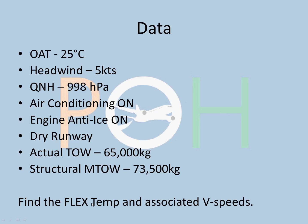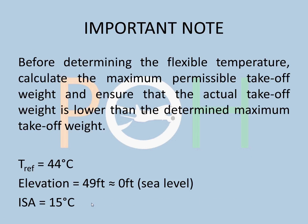Find the flex temp and associated V-speeds. Important note: before determining the flexible temperature, calculate the maximum permissible takeoff weight and ensure that the actual takeoff weight is lower than the determined maximum takeoff weight. Your actual takeoff weight has to be lower than the MTW. If it is more or equal, you cannot perform a flex takeoff — it has to be a TOGA thrust takeoff.